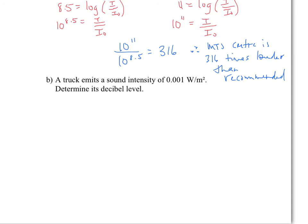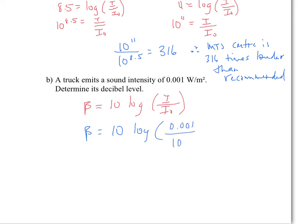A truck emits a sound with a measured intensity of 0.001 watts per meter squared. We want to determine the decibel level. Using the formula: decibels equals 10 log of I over I0, we plug in I equals 0.001 and I0 equals 10 to the power of negative 12, which is the minimum threshold of hearing given in the question. Using a calculator, the result is 90 decibels. That is the sound intensity of the truck.